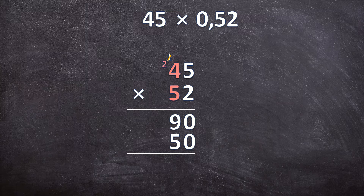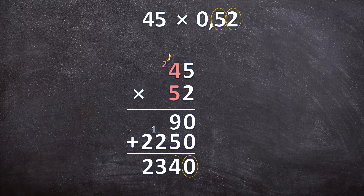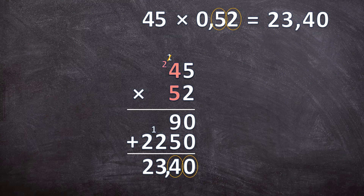Now multiply: 5 times 5 is 25, write down your 5, carry over your 2. 5 times 4 is 20, plus the 2 carried over is 22. Add the two answers together: 0 plus 0 is 0, 9 plus 5 is 14 — write down your 4, carry over your 1 — 2 plus 1 is 3, and then just 2. Go to the original question: there are two digits behind the comma, so the answer needs two digits after the decimal. The answer for 45 times 0,52 is 23,40 — which is the same as 23,4, so you don't need to write that last 0.